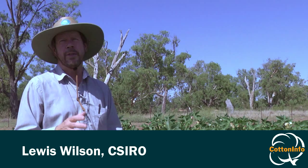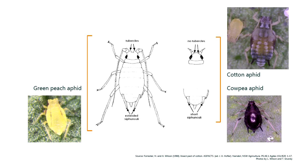We get three species of aphids in cotton that are a problem. The main species we're concerned with is cotton aphid — it will colonise the crop at the start of the season and can progressively develop through the season and become a problem. The other two species, cowpea aphid and green peach aphid, will tend to colonise the crop but then die off as the conditions get hotter.